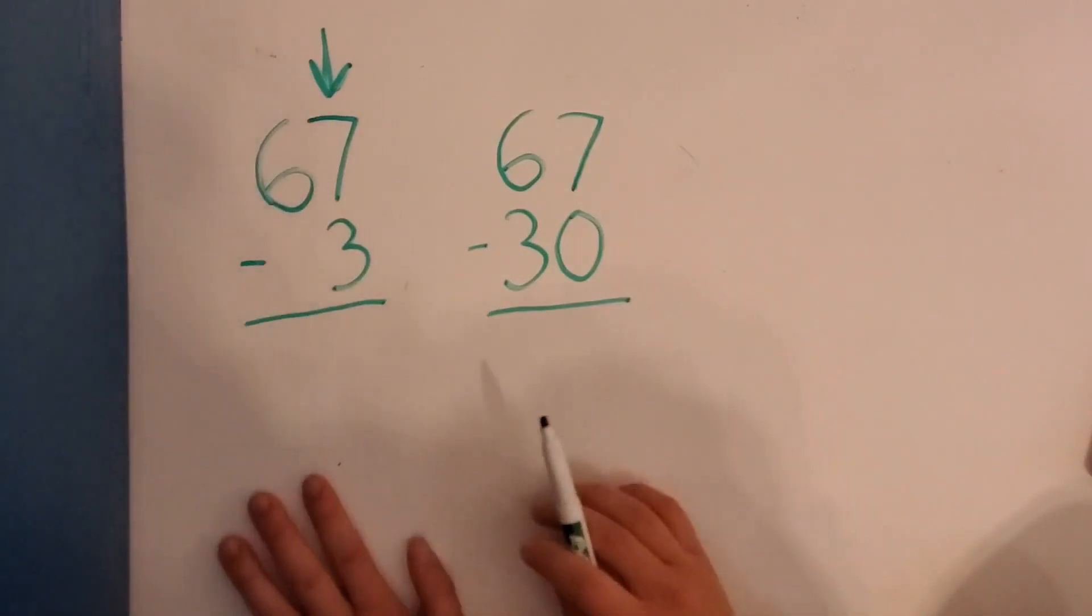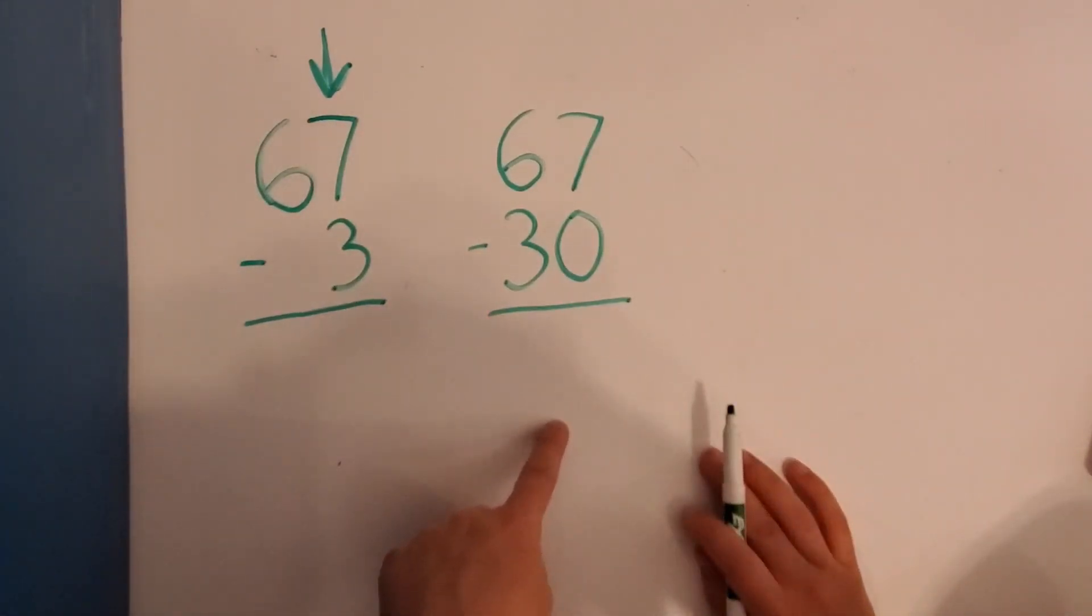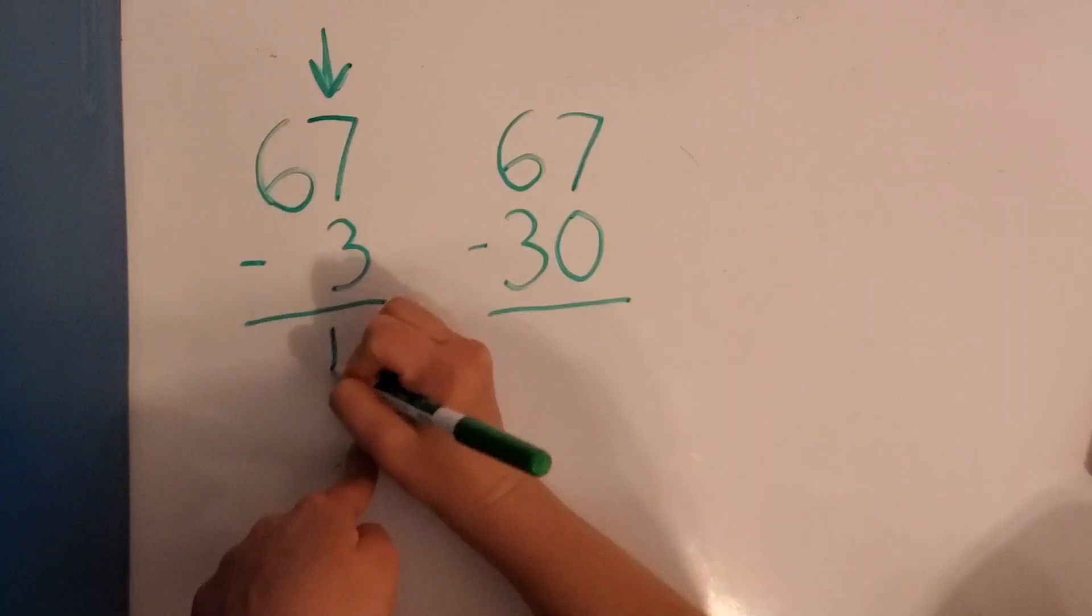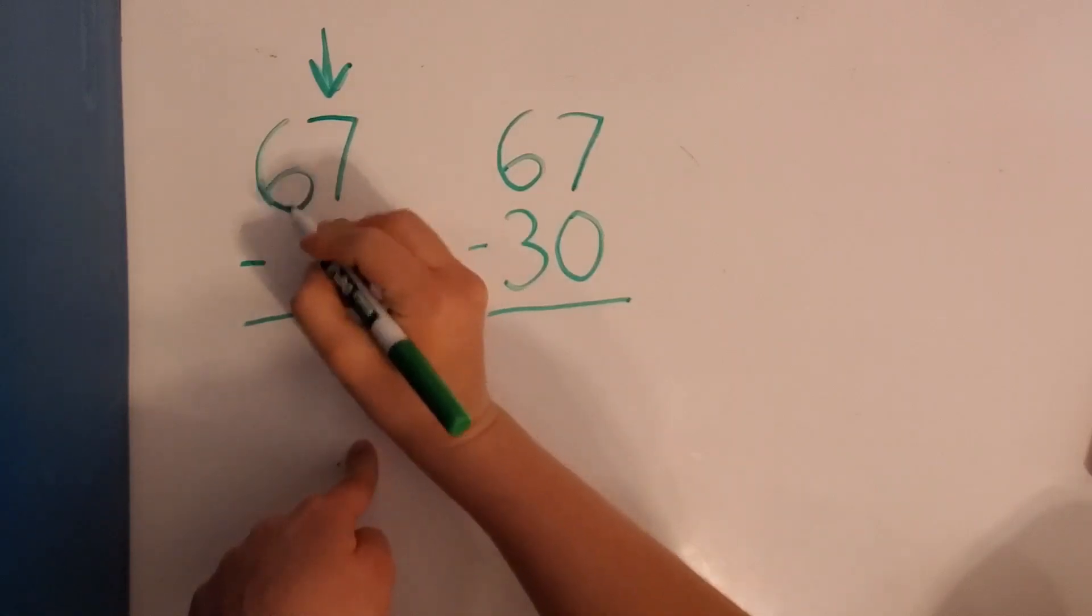So if we do 7 minus 3, count backwards in your head from 7. So 7, 6, 5, 4. Right? So 7 minus 3 equals 4.